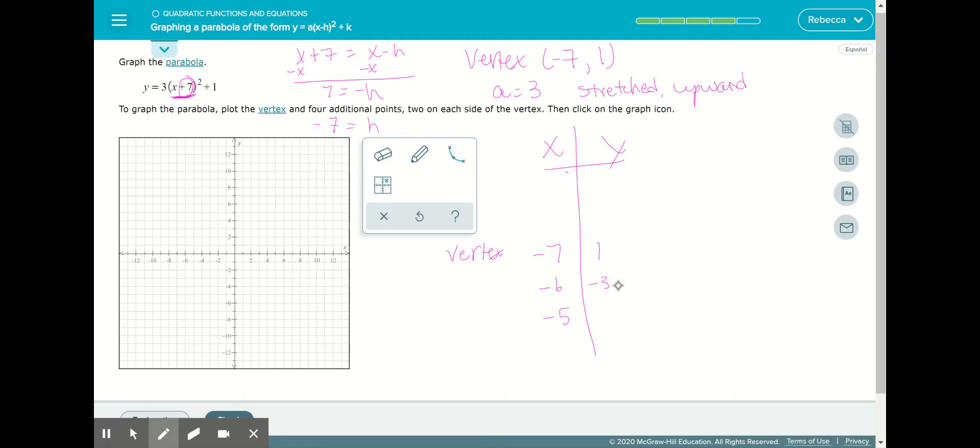Positive 3 times negative 6 plus 7 squared, and then we're adding 1. So now we'll have 3 times 1 squared plus 1. 1 squared is 1 times 3, makes this be 3 plus 1, which is 4.